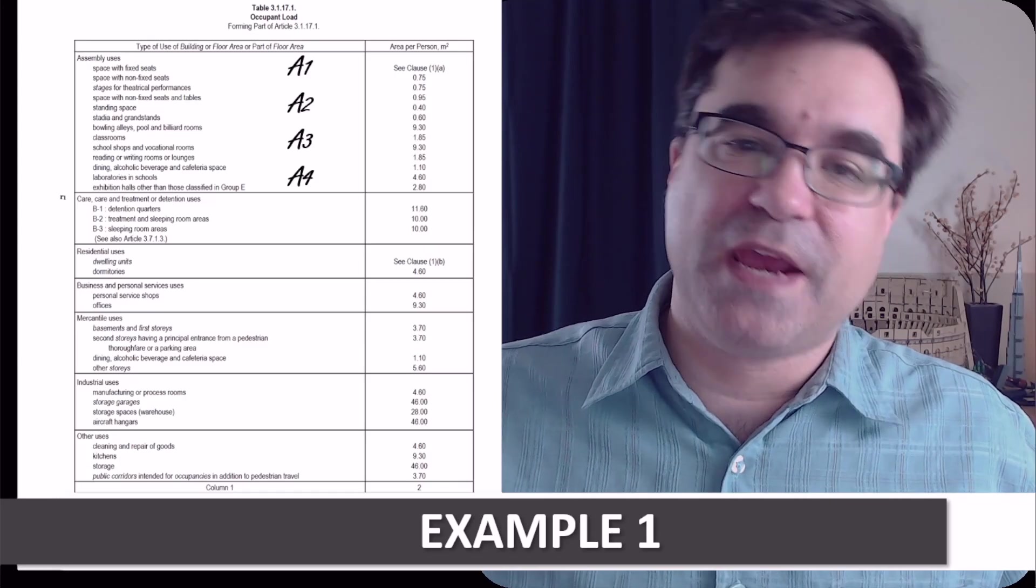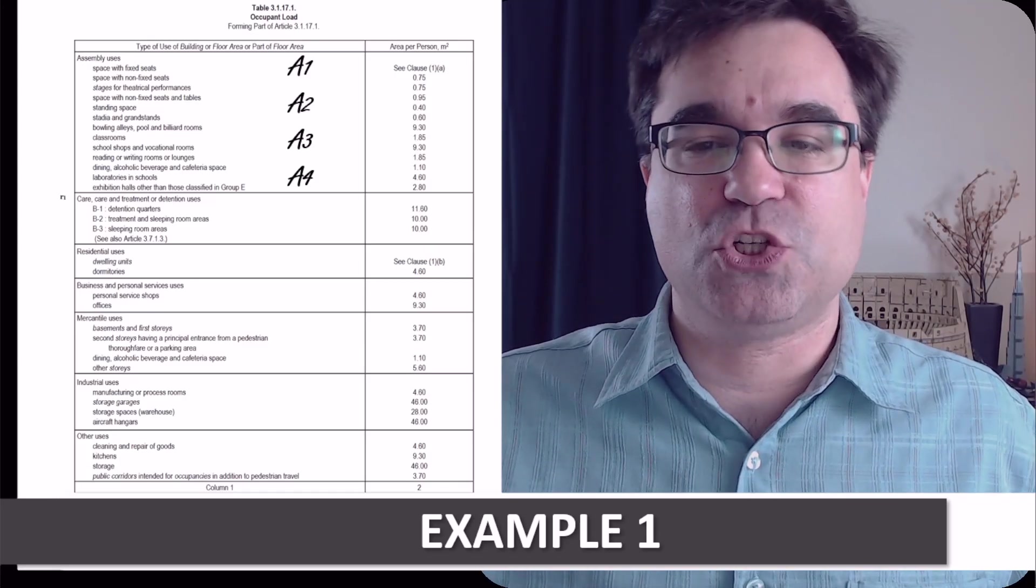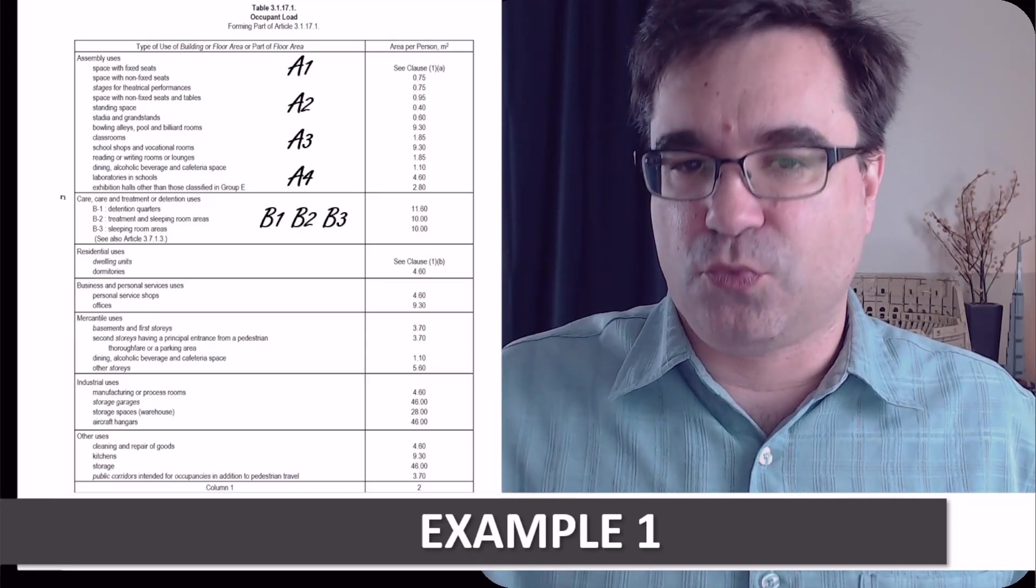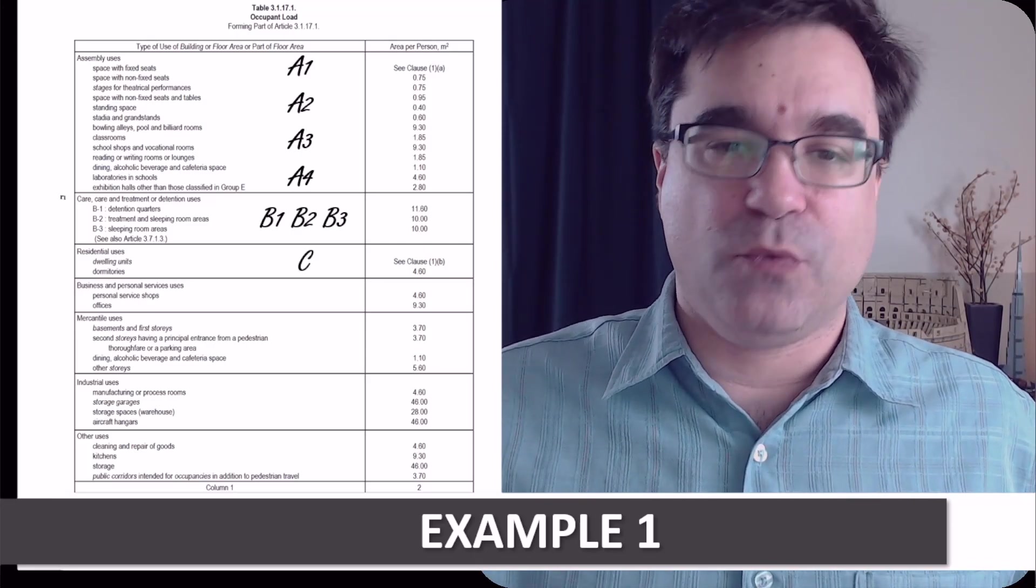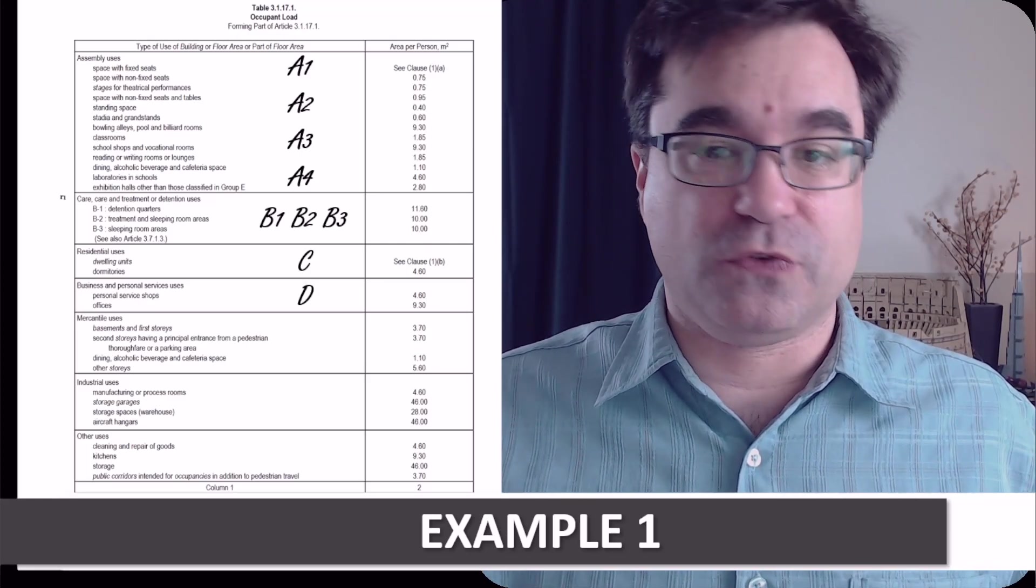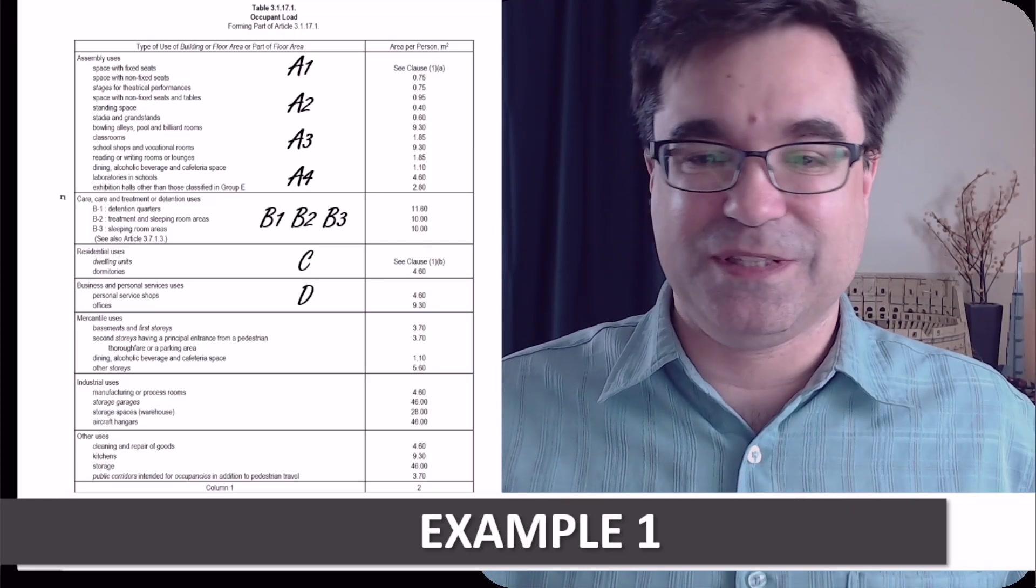Similarly, for care, care and treatment, or detention, I write B here. So, B1, B2, B3 occupancies. For residential, I write C here. For business and personal services, I write D here, the way you see it.